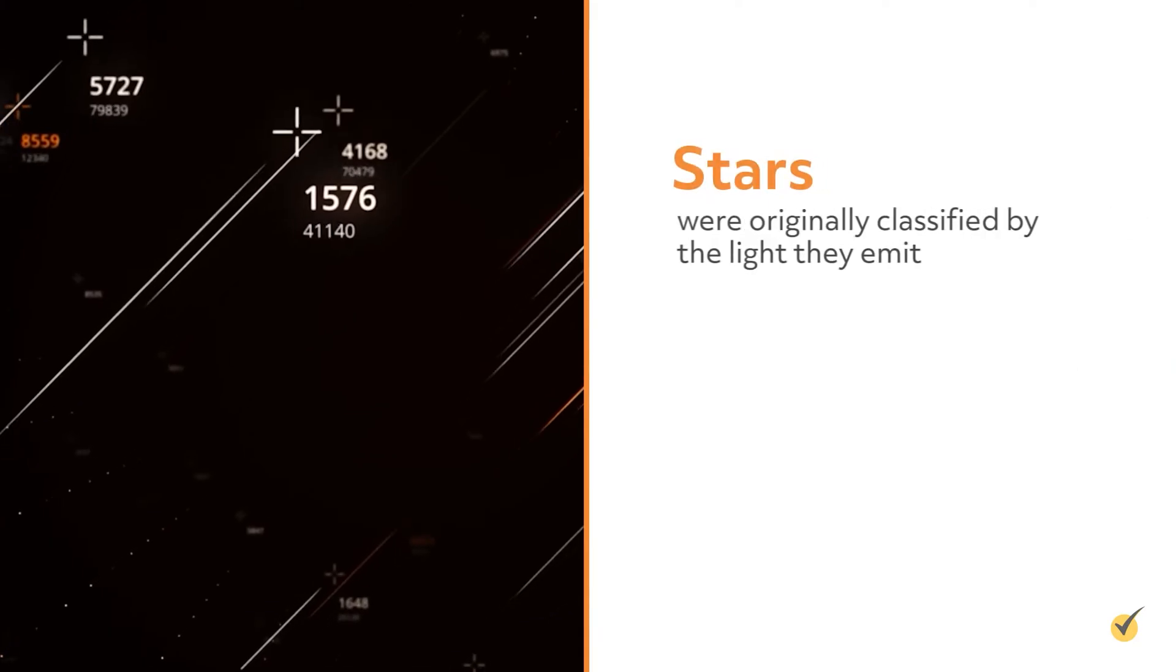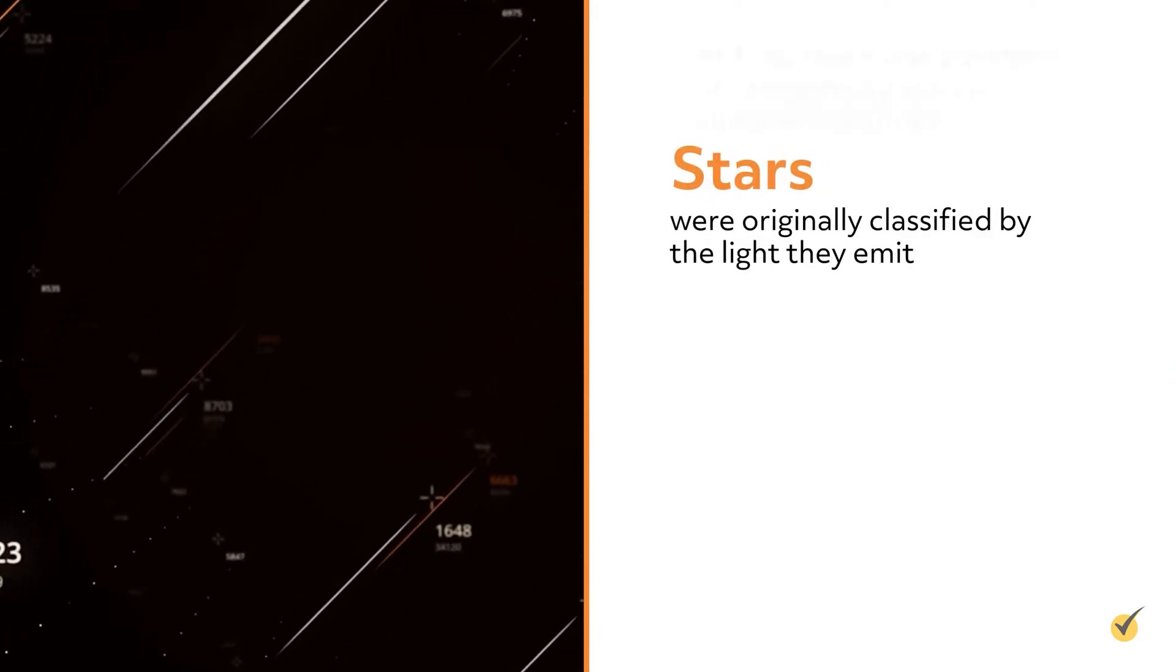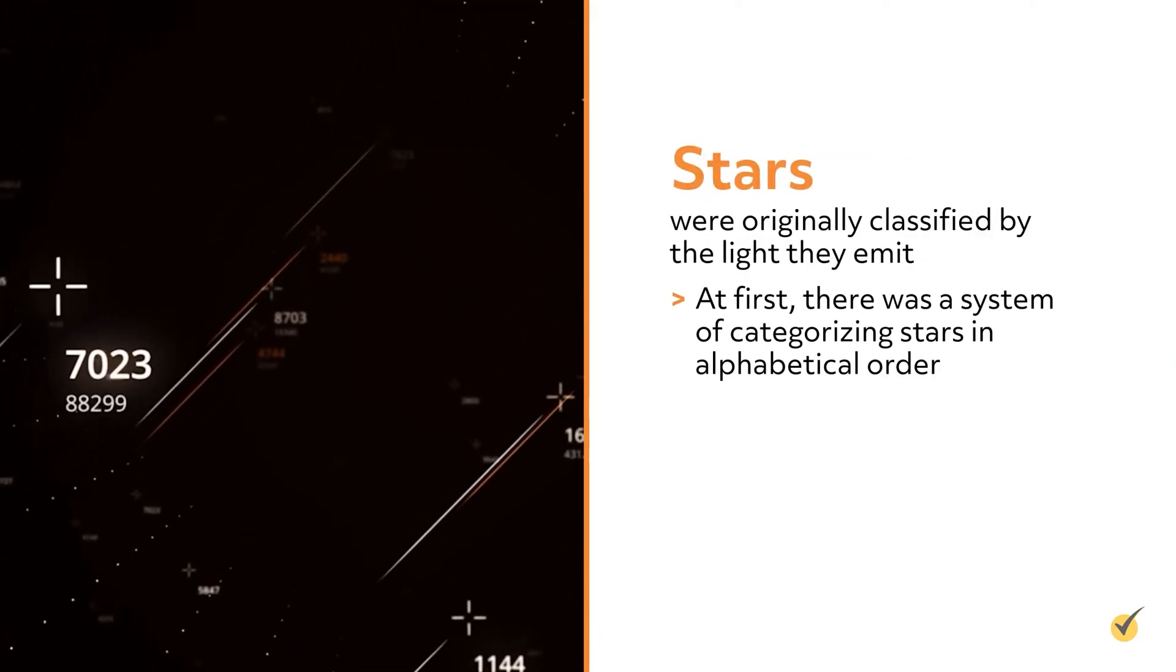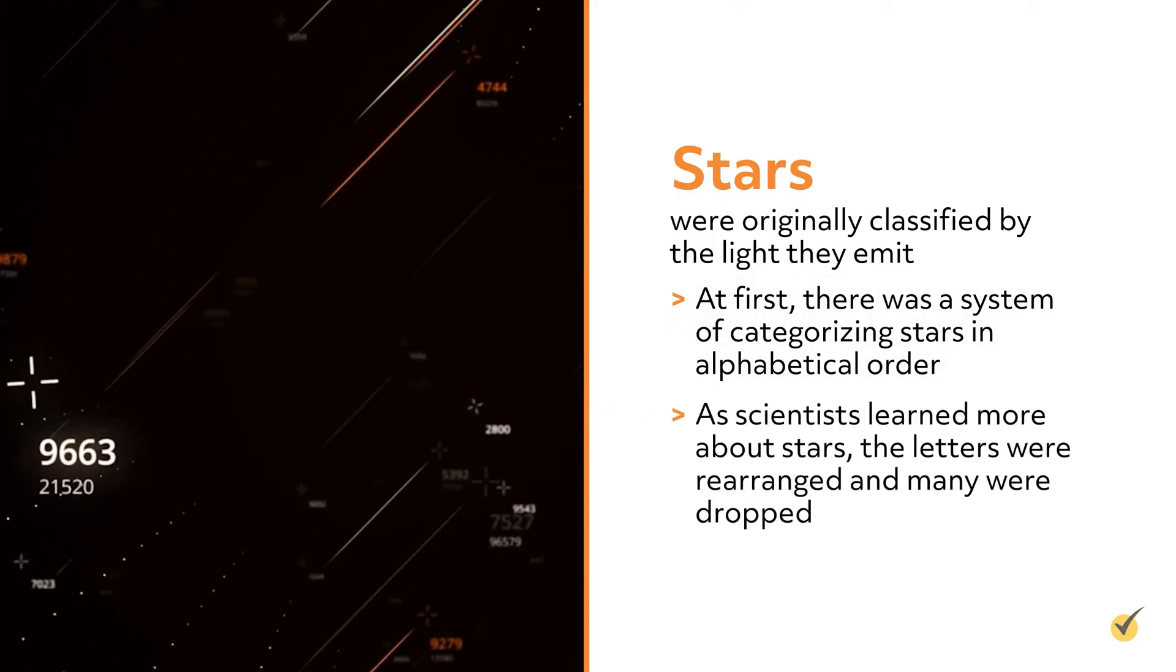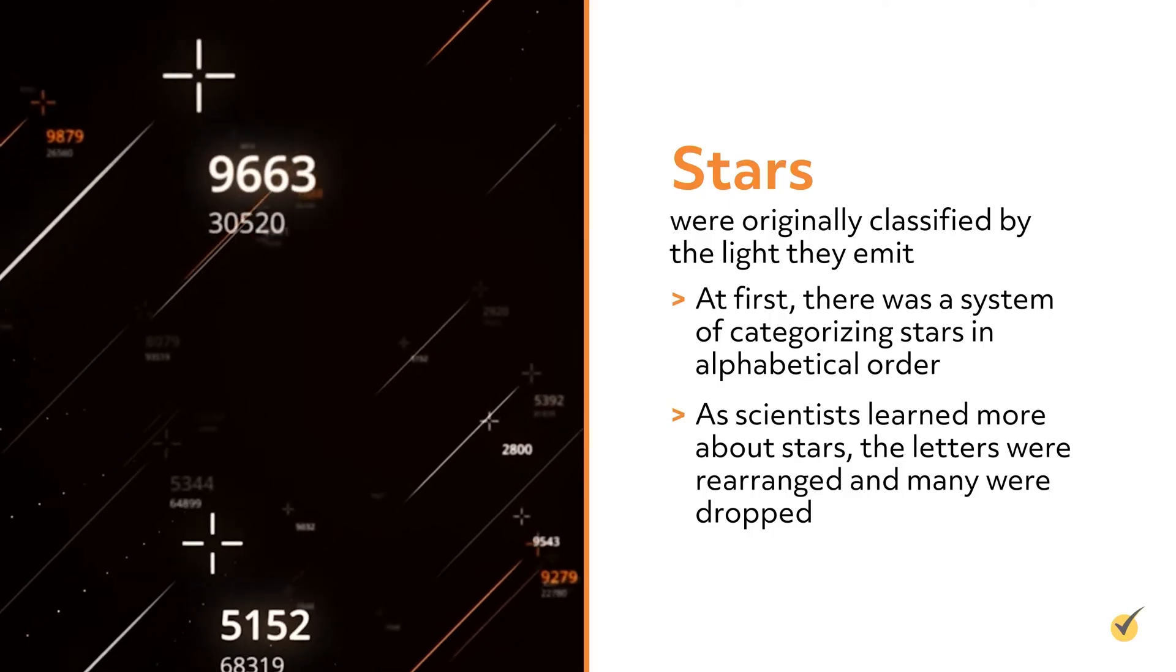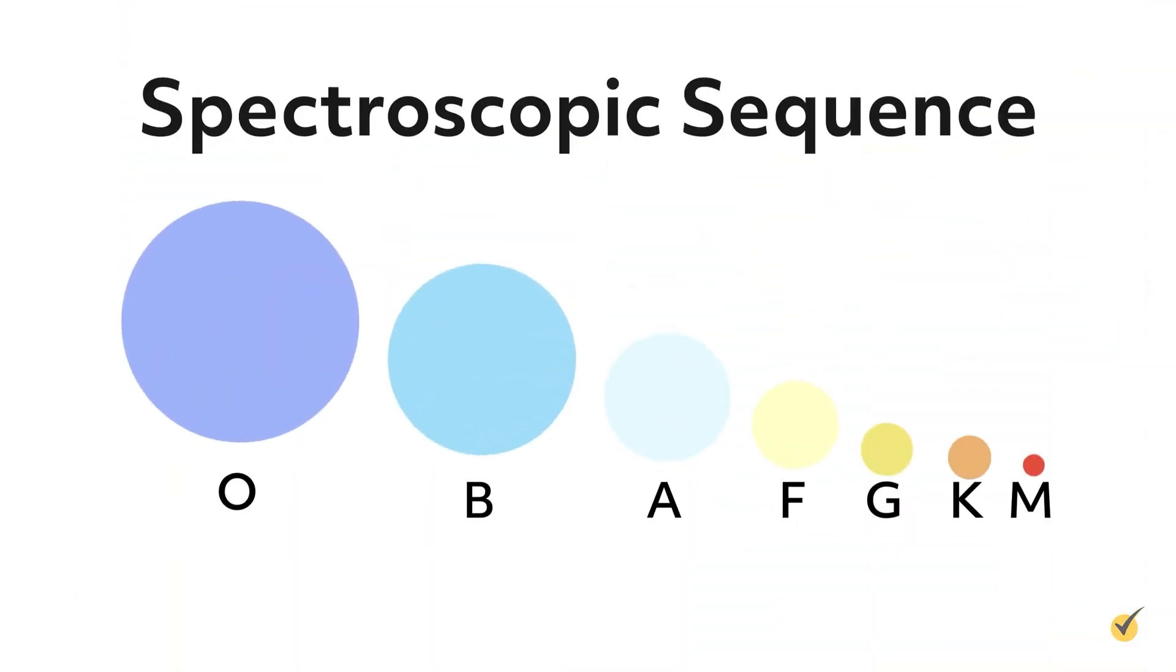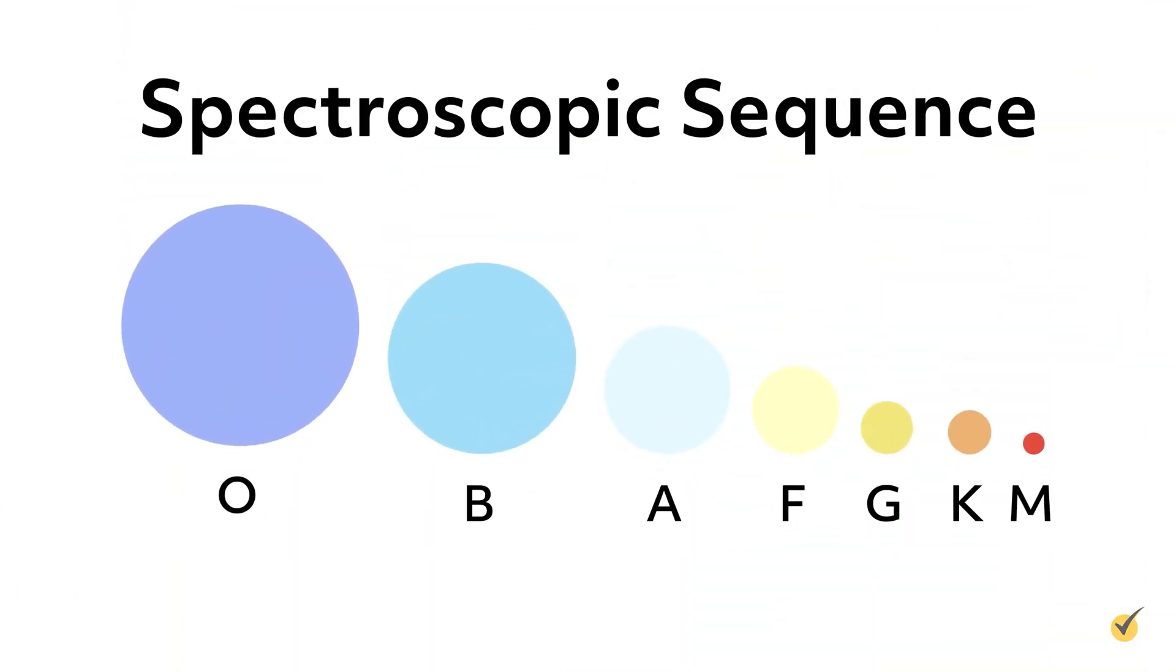Stars were originally classified by the light they emit. At first, there was a system of categorizing stars in alphabetical order. But as scientists learned more and more about stars, the letters were rearranged and many were dropped. As a result, stars today are classified using the following letters.